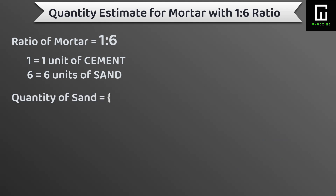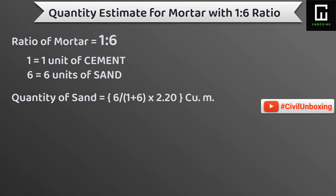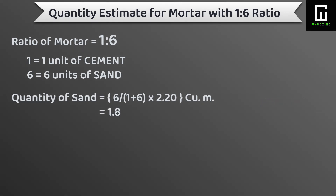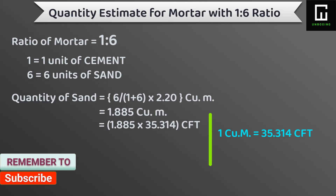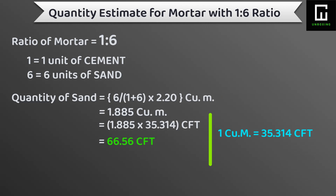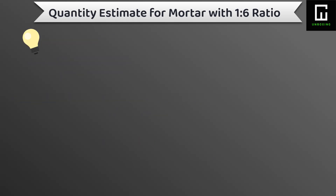Now the quantity of sand is 6 divided by (1 + 6) multiplied by 2.20, and we get the quantity of sand as 1.885 m³. Converting to cubic feet — we multiply by 35.314 — we get the value as 66.56 cubic feet of sand required for 2.20 m³ dry volume of mortar with a ratio of 1:6.